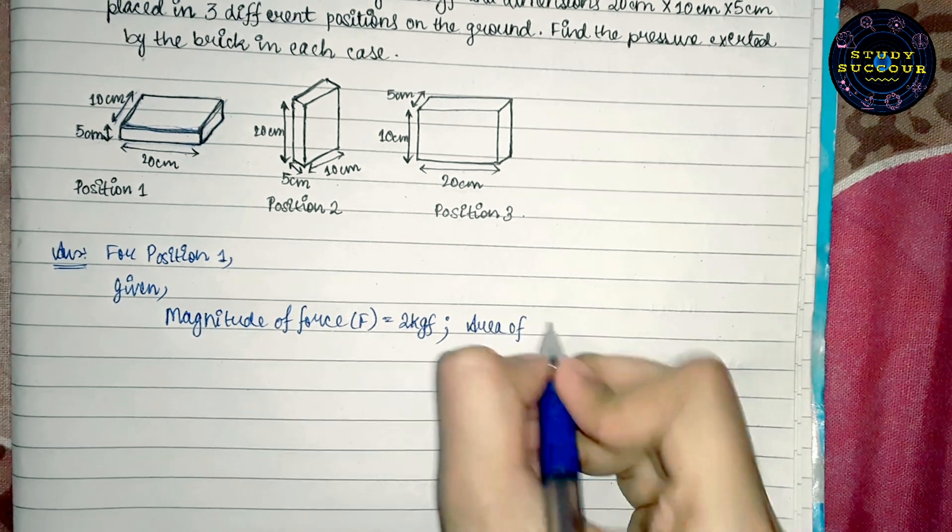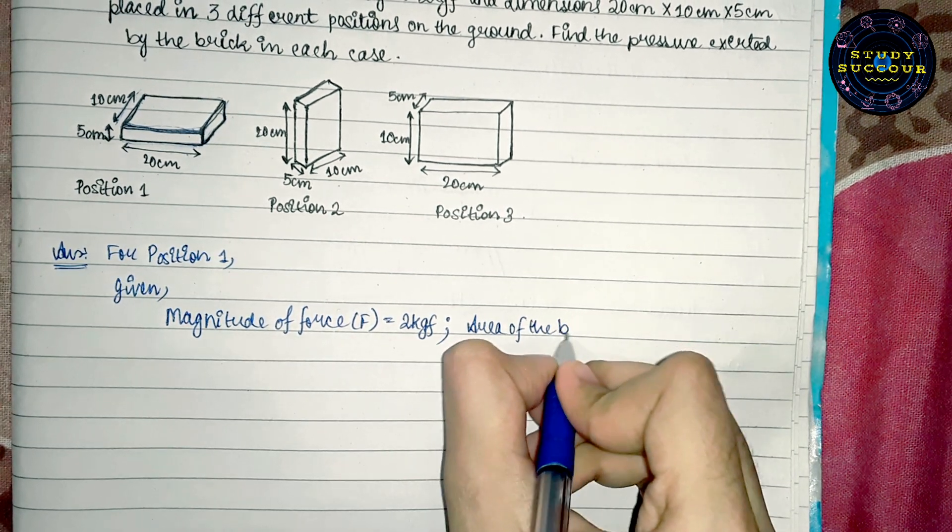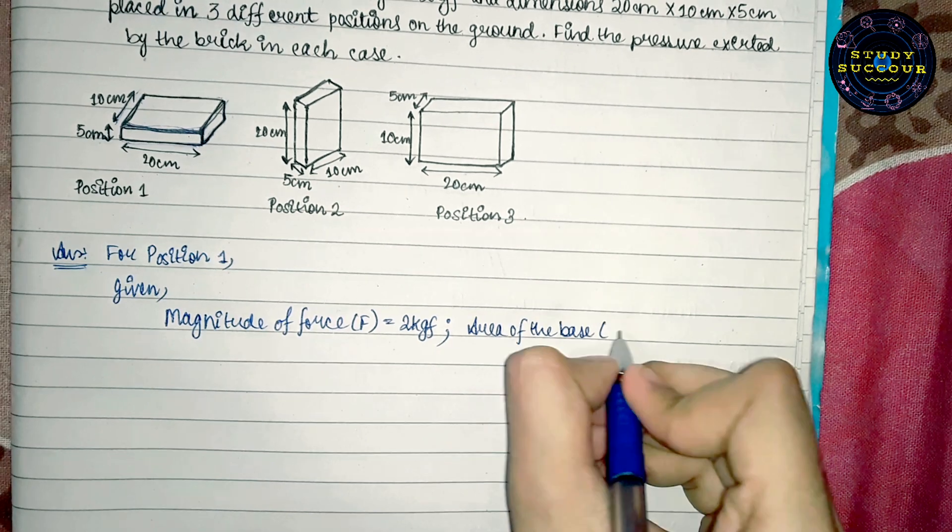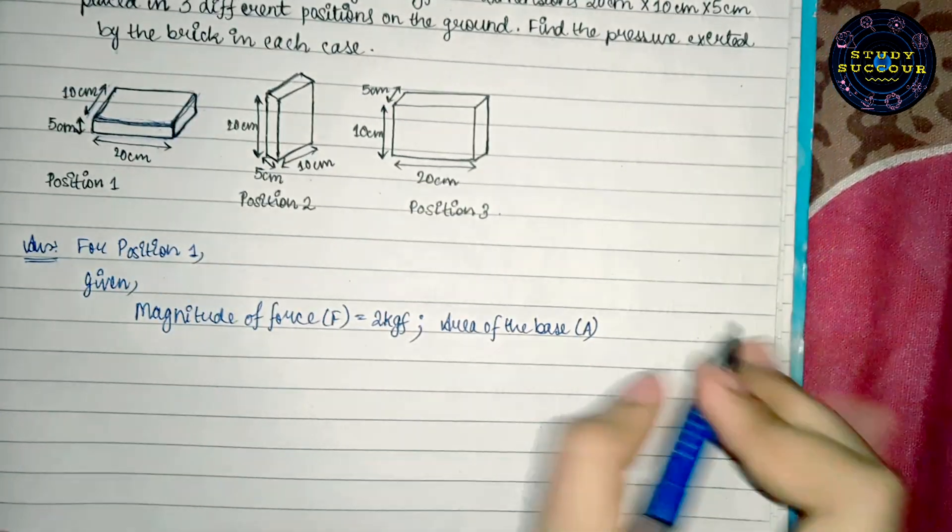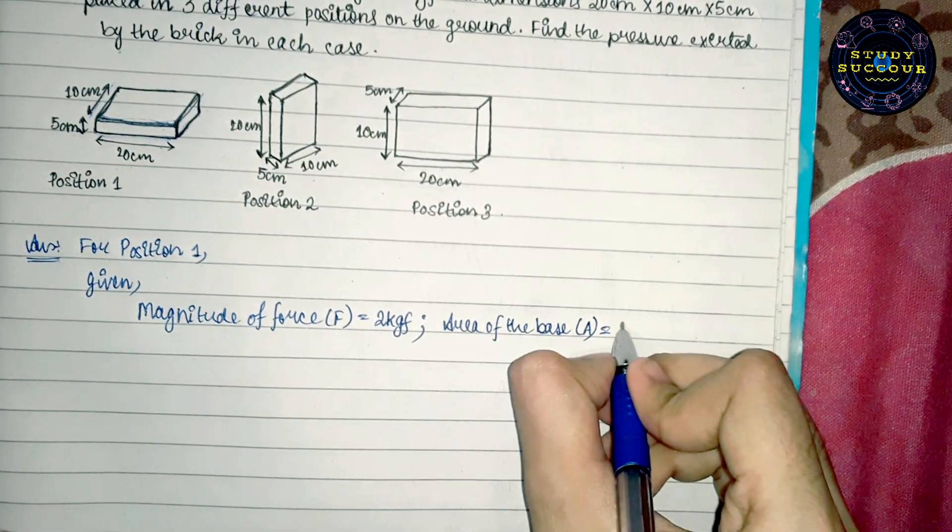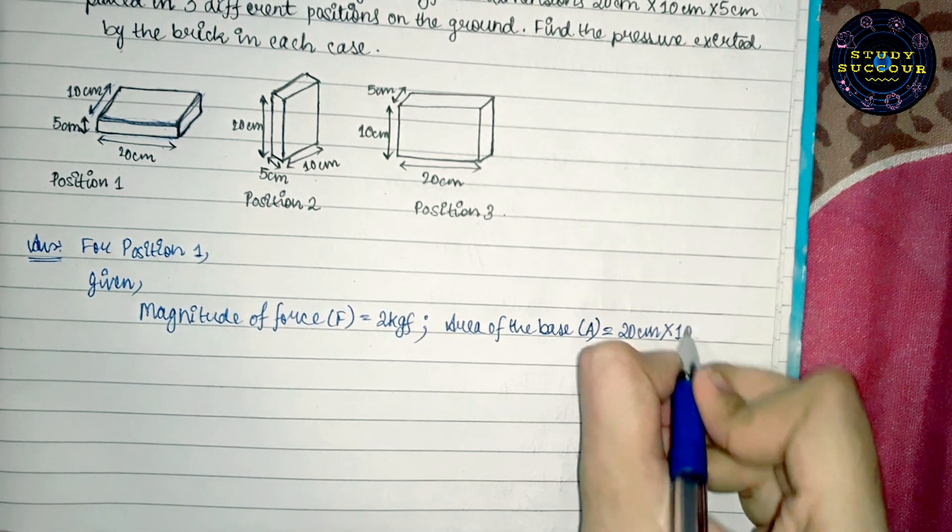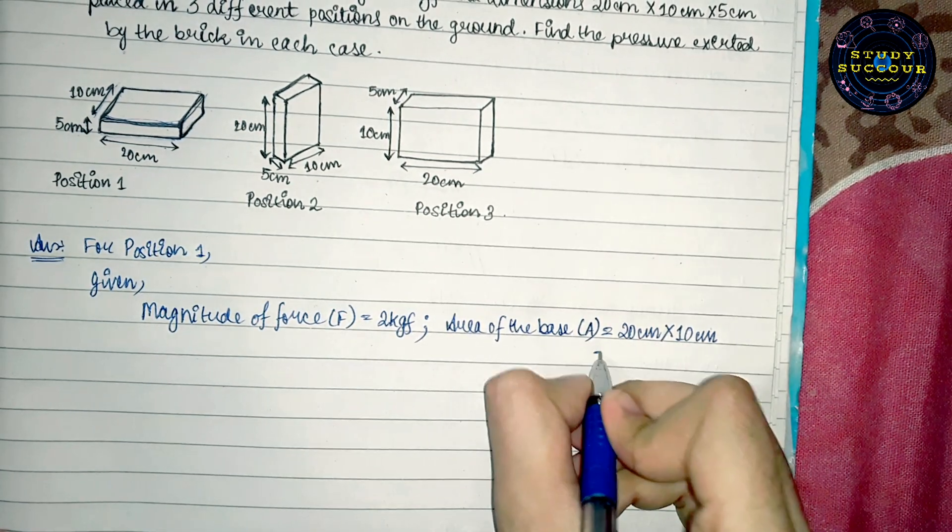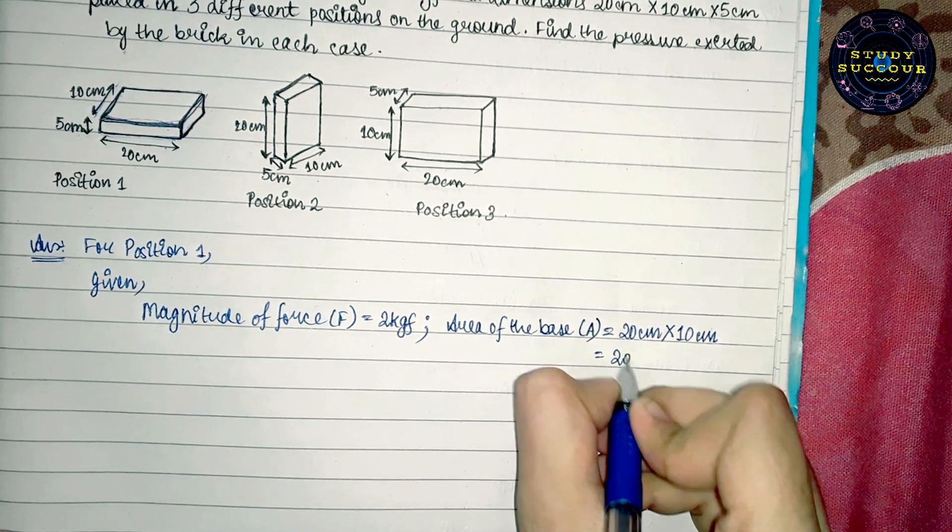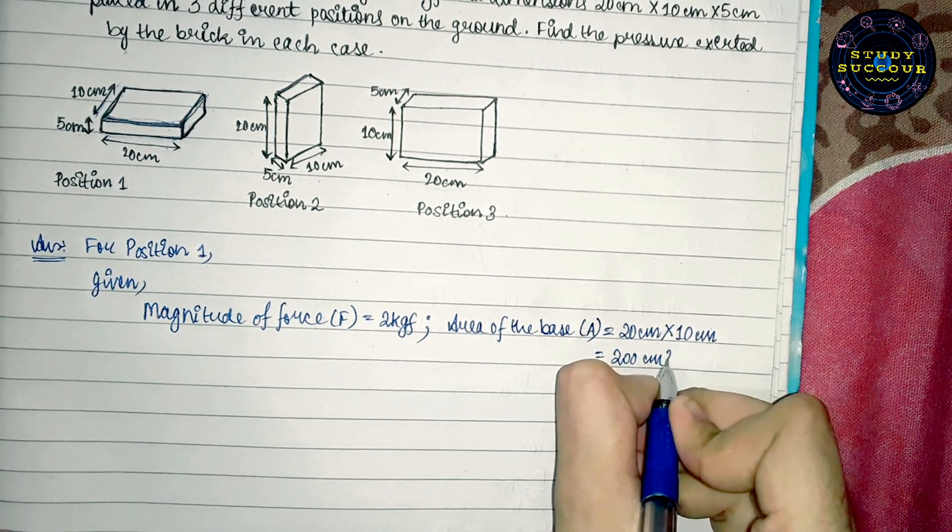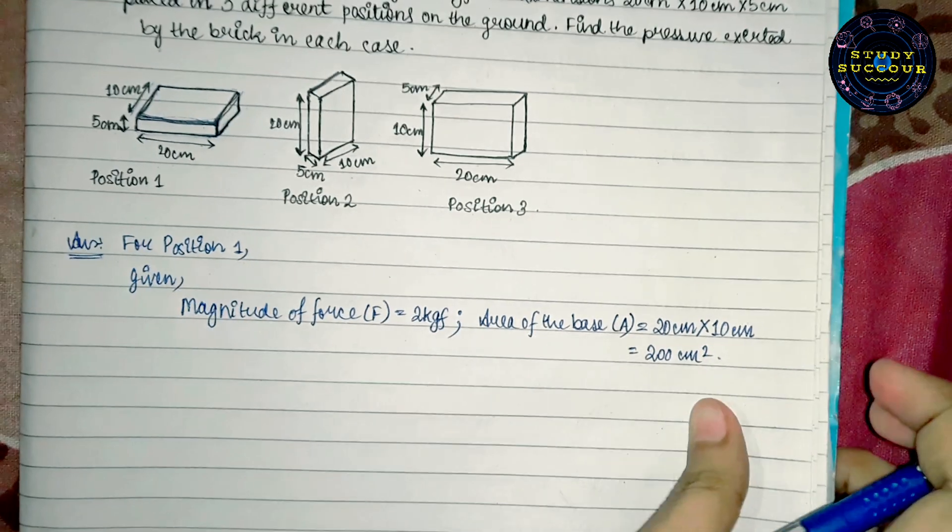Area of the base A is equal to 20 cm x 10 cm, which is equal to 200 cm².